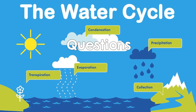Question five: What causes evaporation? Choose one. Question six: What are clouds? Choose one. And question number seven: What causes precipitation? Choose one.